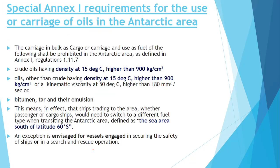In the Antarctic area, there is a special requirement under Annex 1. The carriage of oil in bulk as cargo or its use as fuel is prohibited in the Antarctic area if the crude oil has a density greater than 900 kg per cubic meter. Similarly, if the oil is other than crude oil and its density is greater than 900 kg per cubic meter at 15 degrees Celsius, it cannot be carried. Bitumen, tar, and their emulsions are also prohibited.